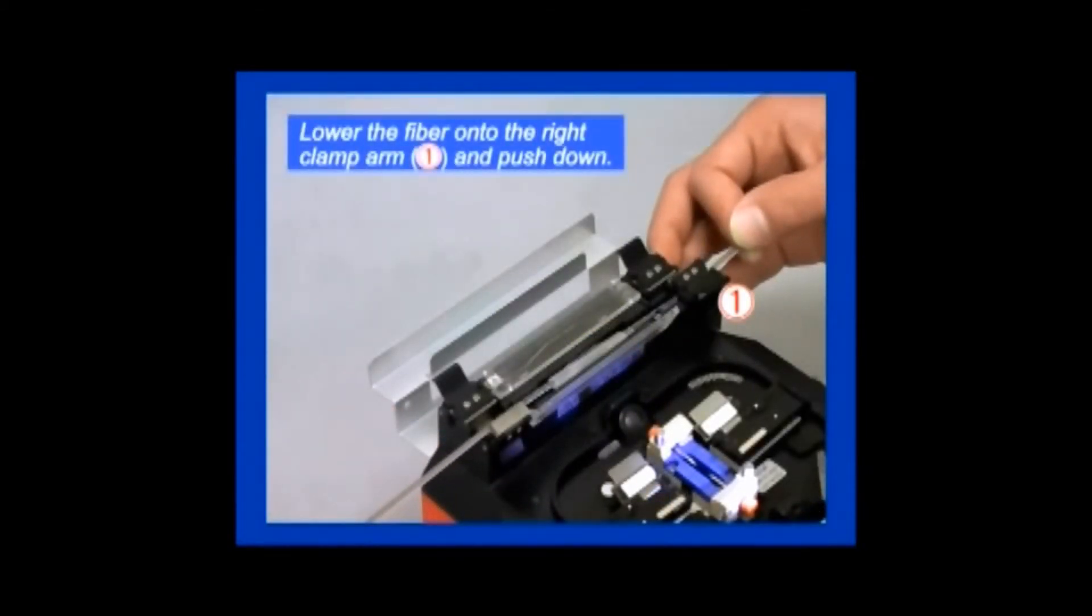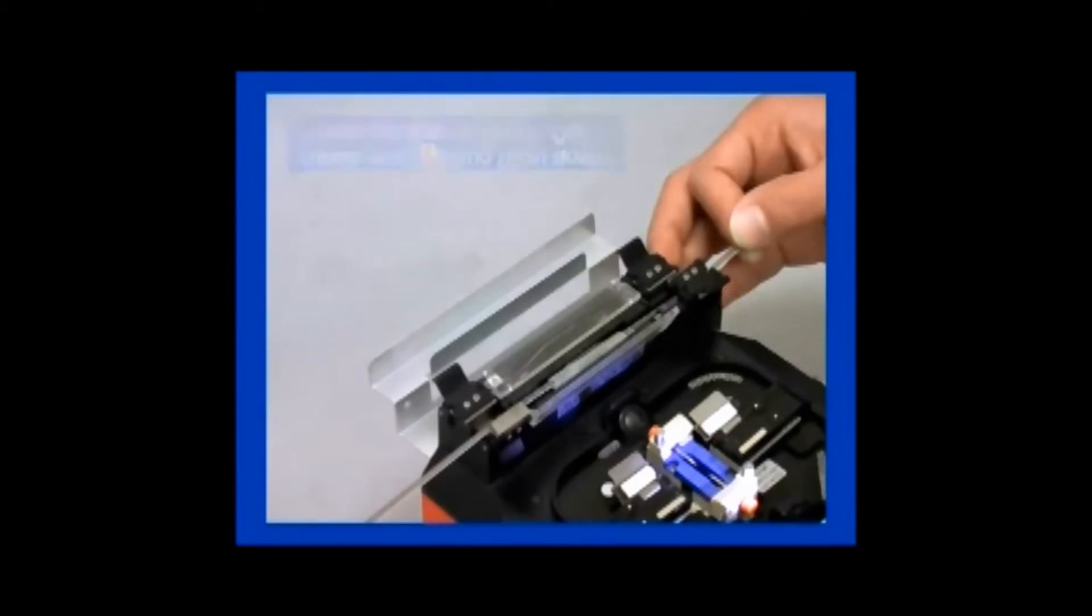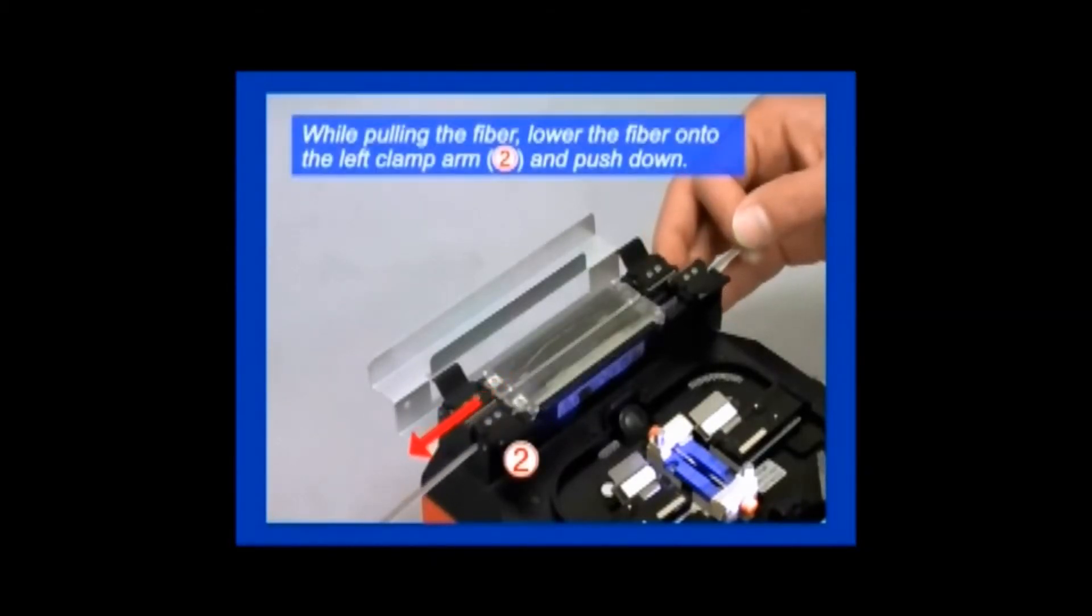The fiber joint is then lowered onto the right clamp, arm number one, and pushed down. While pulling the fiber, the left side of the ribbon is lowered onto the left clamp, arm number two, and pushed down.